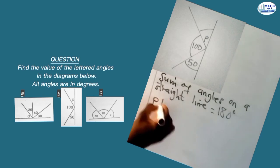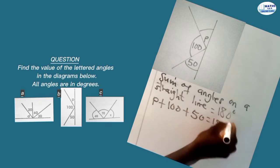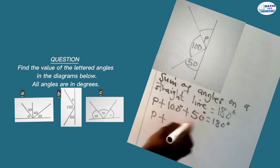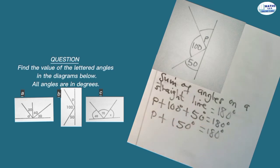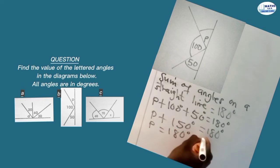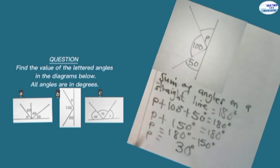We add all of them: p plus 100 plus 50, all equated to 180 degrees. So p plus 150 degrees equals 180 degrees. Making p the subject by grouping like terms, p equals 180 degrees minus 150 degrees, which gives p equals 30 degrees.